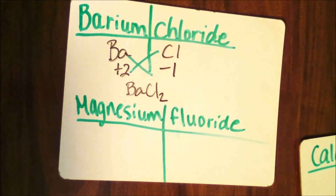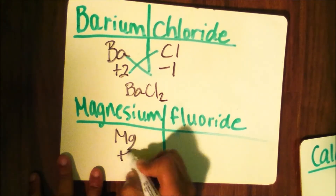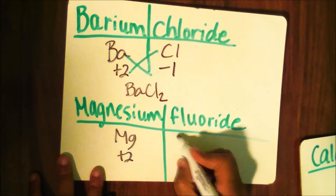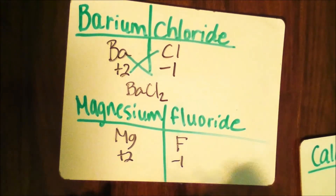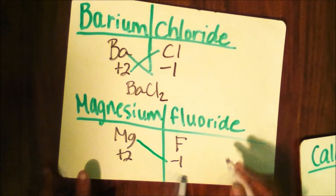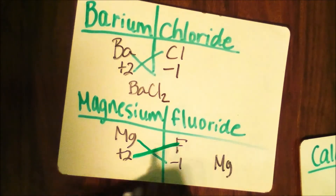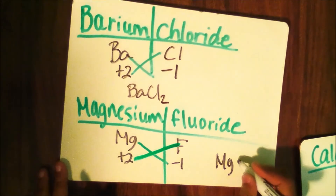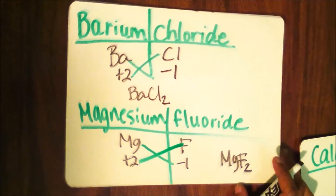They are exchanging ionic charges. The next one: magnesium has a plus 2 charge, and fluoride has a negative 1 charge. Again, they're going to swap charges — magnesium is going to take the 1, and fluoride is going to take the 2 — giving you MgF₂, the formula for magnesium fluoride.